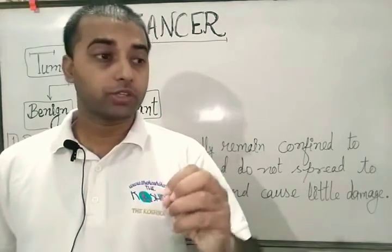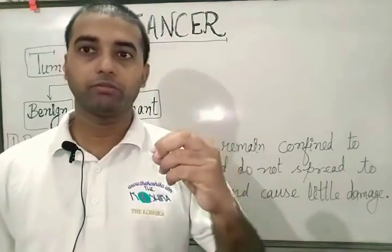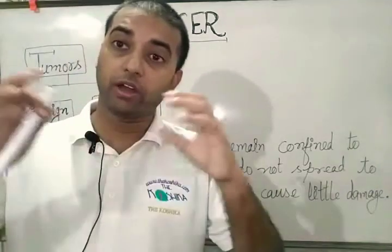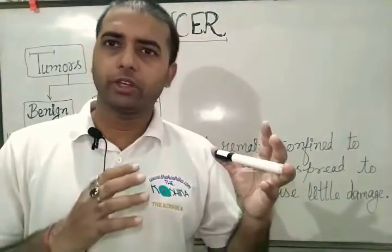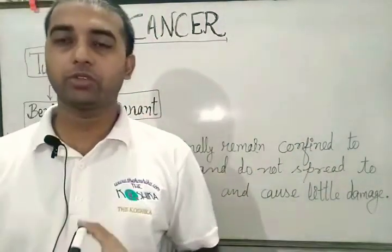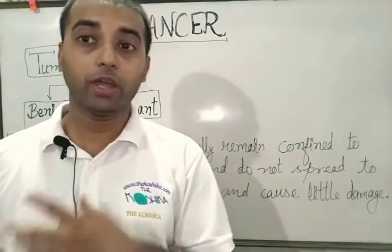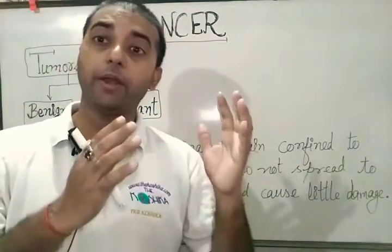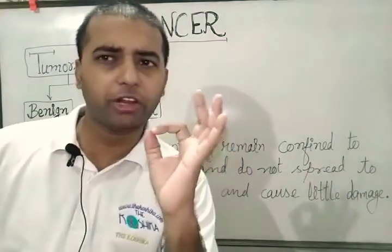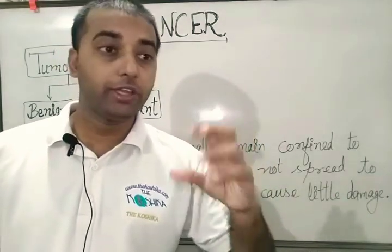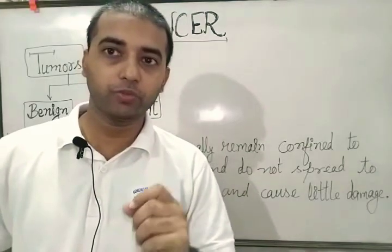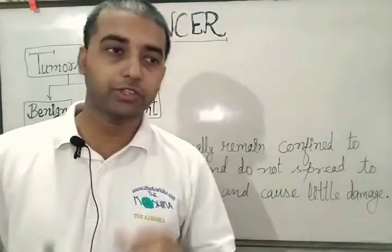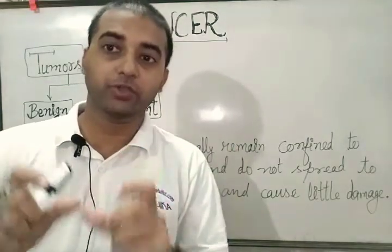Cancer is one of the most dreaded diseases in this world, and in human beings this is the most dangerous disease on the globe. To understand cancer, we should understand how our body's normal cells function. Our body's normal cells work in a very coordinated manner — they follow a regulatory mechanism and act on a contact inhibition process, which means they inhibit uncontrolled growth and always divide in a controlled manner.